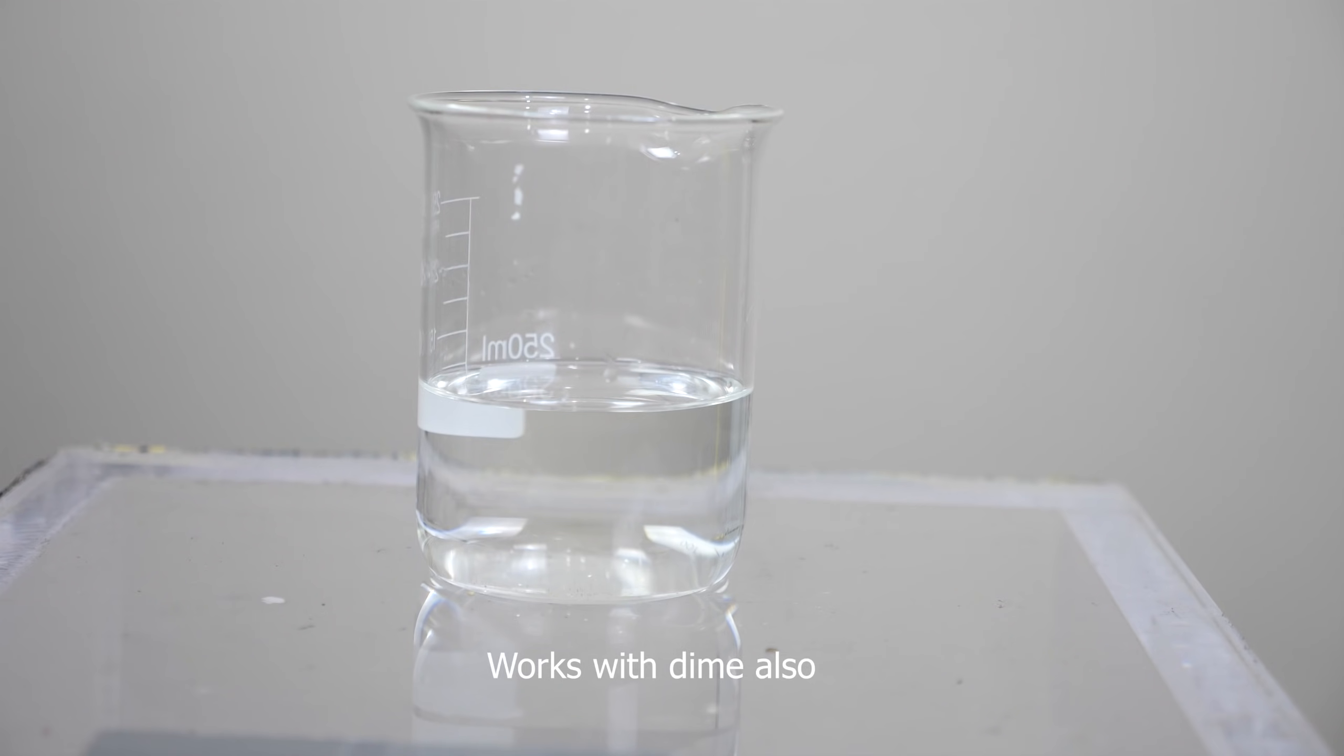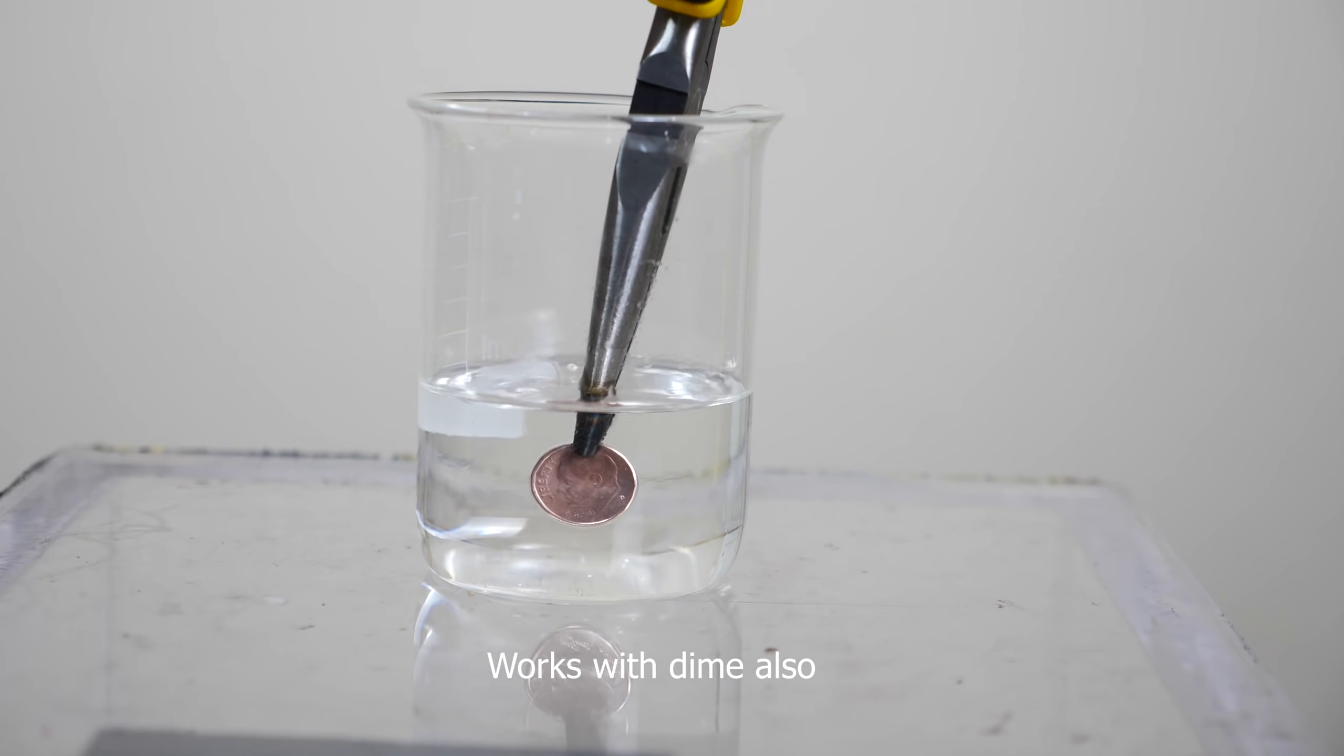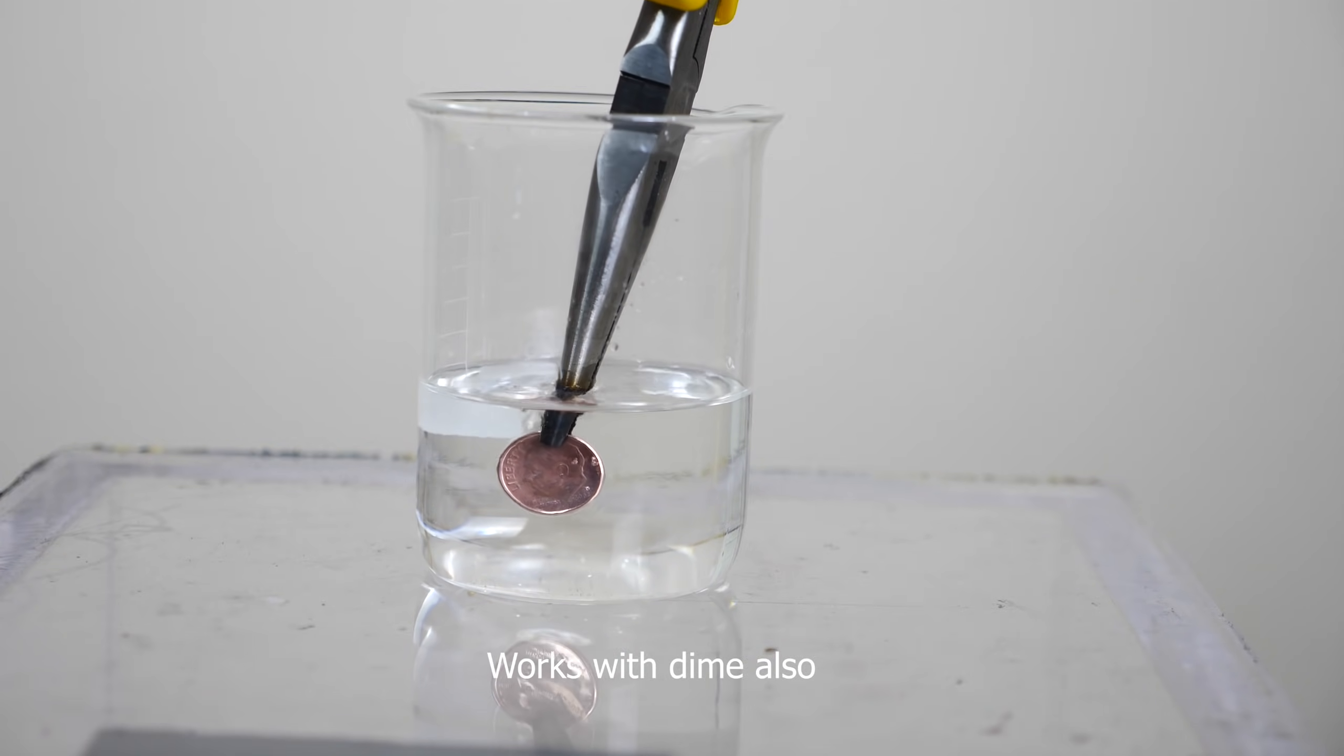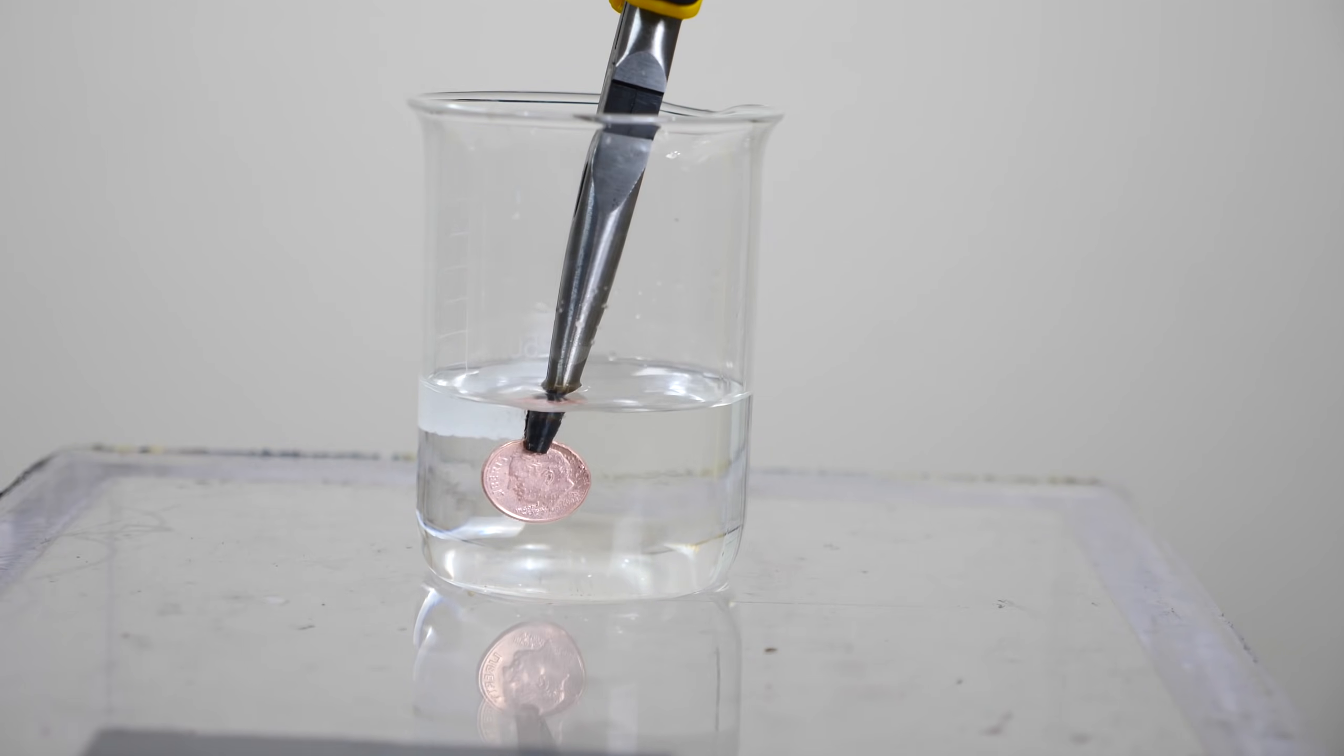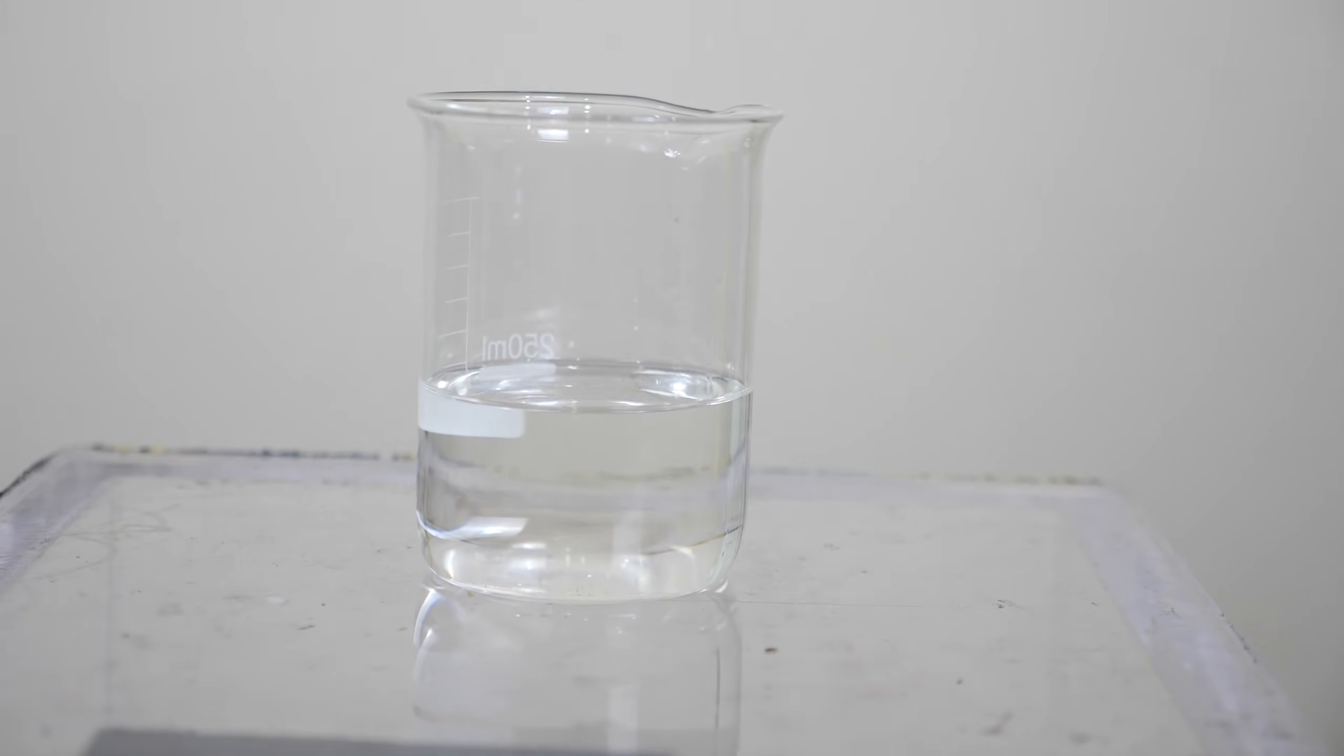But what happens when you stick it in the methanol is the copper oxides that are on the surface can actually just be turned back into copper by reacting with the methanol. And so it's actually a surface reaction of the methanol with the copper oxides that you get the actual pure surface of the copper on the surface of the coin. If you just did it in water, you wouldn't end up with the same result.